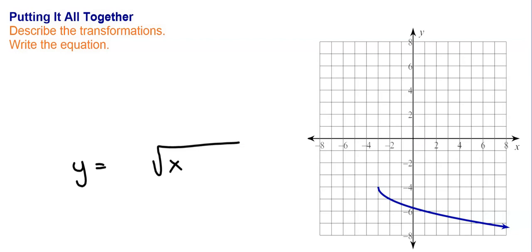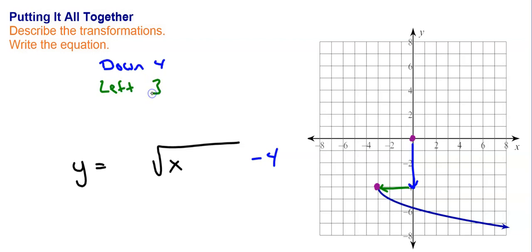All even roots start at the origin — square root, fourth root, sixth root all start there. So you compare the origin with the starting point of this graph. To go from the origin to this point, we have to go down 4. A down 4 means a minus 4 on the outside of the radical. We also have to go to the left 3. Left and right go on the inside of the radical, and because it's left, it's the opposite — so it's a plus 3. To check if the size changed, go from the starting point, over one, down one; if you're still on the graph, the size didn't change — and in this case it didn't.